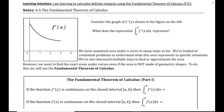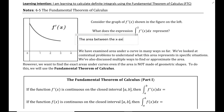Here we have a graph of f prime of x shown in the figure to the left, and we want to talk about what the expression — the integral from 0 to 2 of f prime of x dx — represents. Up until now we have talked about this representing the area between the x-axis and f prime of x, specifically from x equals 0 to x equals 2. That's the area bounded by that region, and we have examined the area under the curve in various ways.